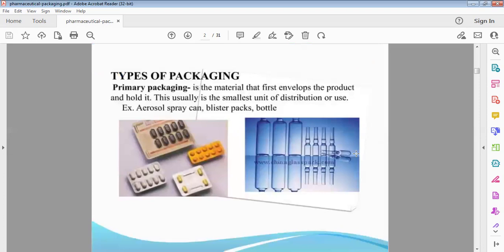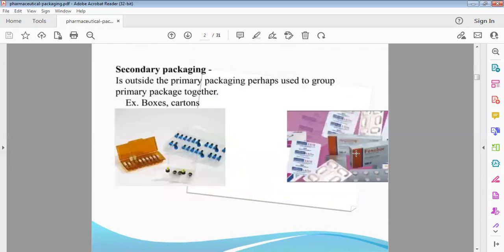Types of packaging. Primary packaging, secondary packaging, tertiary packaging. Primary packaging can use a product on the direct. The first envelope of the product which will hold it, the smallest unit of distribution or use. Aerosol sprays, blister packs, bottles. Next, secondary packaging. Outside primary packaging, cover the primary package. For example, put the sheet in a cotton box. That is secondary packaging, boxes, cotton box.